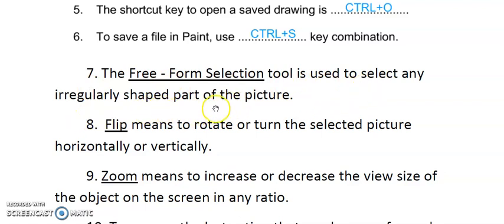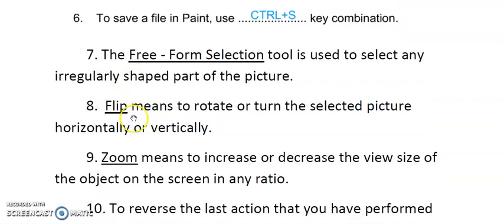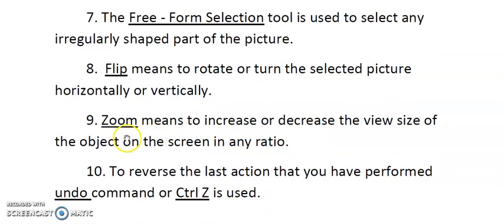Number seven: The FREE FORM SELECTION tool is used to select any irregularly shaped part of the picture. Number eight: FLIP means to rotate or turn the selected picture horizontally or vertically. Number nine: ZOOM means to increase or decrease the view size of the object on the screen in any ratio.